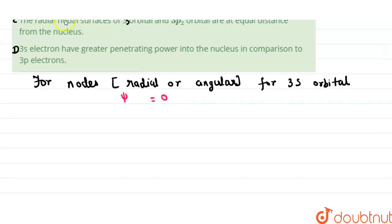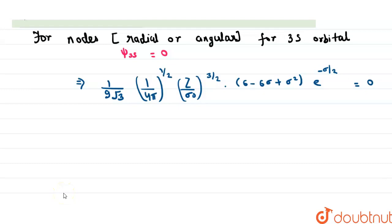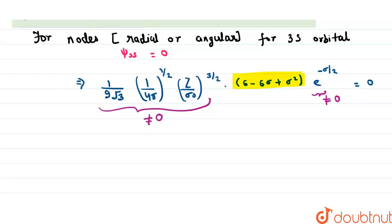So psi 3s equals 0. We are given the wave function for 3s. This expression needs to be equated to 0. The prefactor terms are non-zero constants and the exponential function cannot be equal to 0. So the only expression that can be equal to 0 reduces to sigma squared minus 6 sigma plus 6 equal to 0.